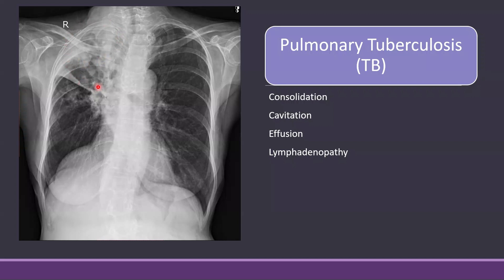Usually for white opacification, the differential is consolidation, collapse, or effusion. This is obviously not a common site for effusion — effusion is usually seen at the bases. Within this opacification you can see there are areas which we call air bronchograms. These are the areas you can see here inside this opacification. Air bronchograms are typical for consolidation.